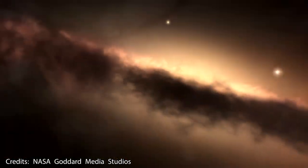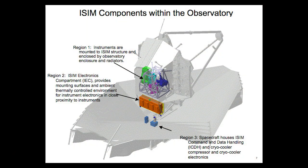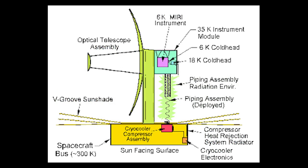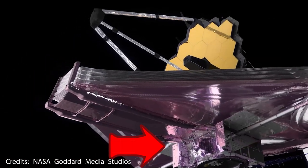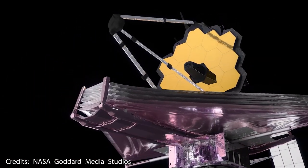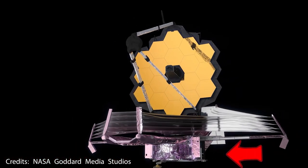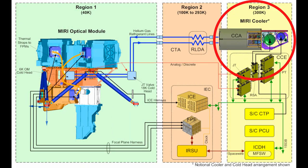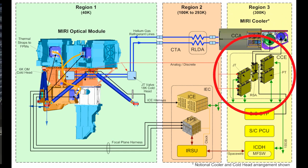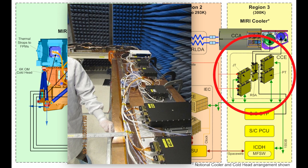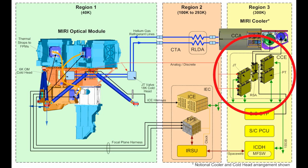And here is how it works. The whole cooling system is distributed throughout three different regions in the telescope. Region 3 is located in the heart of the spacecraft bus, on the sun-facing warm side of the observatory, and it is in here where the primary piece of the cooling system, called the cryocooler compressor assembly, or CCA for short, is located. This piece is controlled by the cryocooler control electronics assembly, or CCEA for short, which is also located within the spacecraft bus in Region 3.